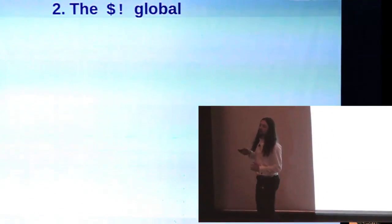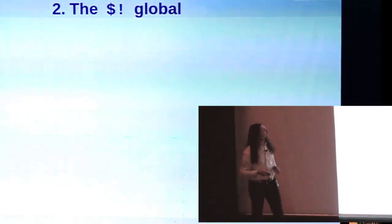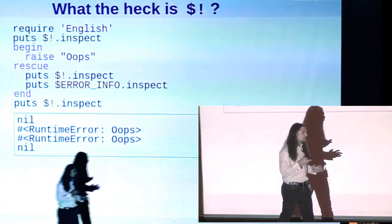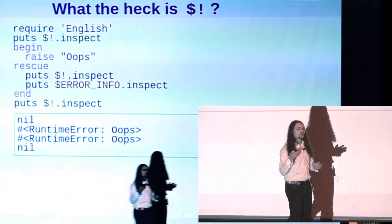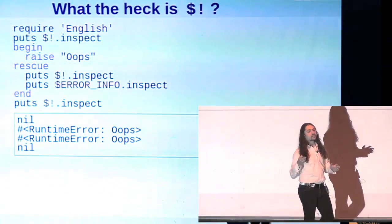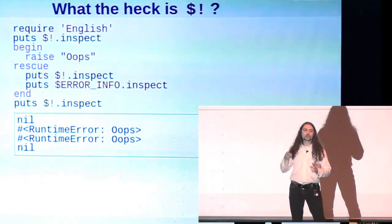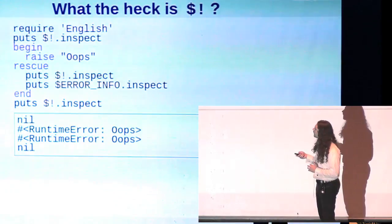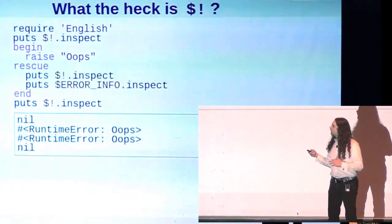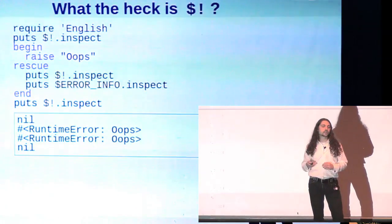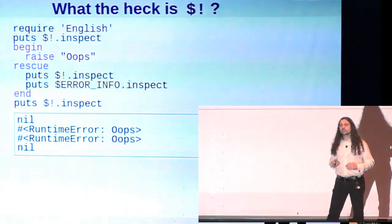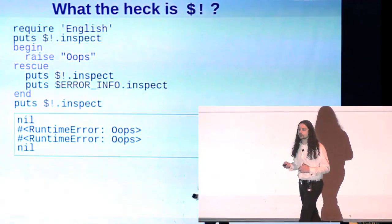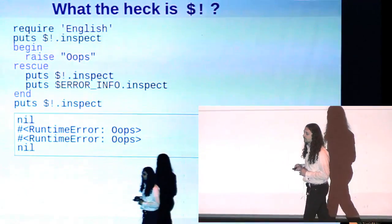The dollar bang global variable. What the heck is the dollar bang variable? Well, this is a global that Ruby keeps, and it always contains a reference to the exception that is currently being raised, currently being handled. If there is no exception being raised, then it is nil. It is also known by the alias error info if you require the English module.